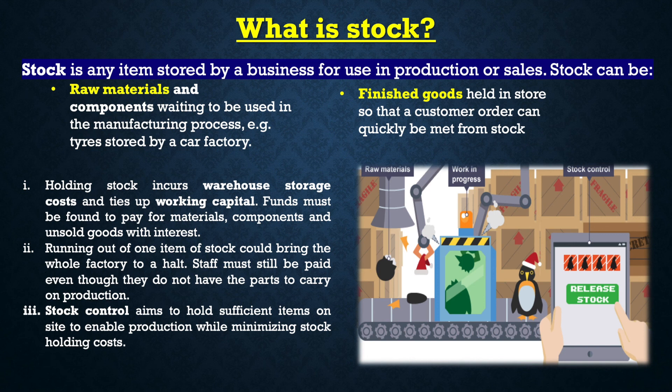Holding stock incurs warehouse storage costs and ties up working capital. Funds must be found to pay for materials, components and unsold goods with interest. Running out of one item of stock could bring the whole factory to a halt, and staff must still be paid even though they do not have the parts to carry on production. Stock control aims to hold sufficient items on site to enable production while minimising stock holding cost.